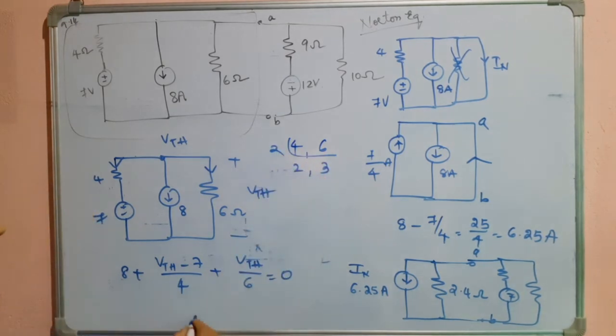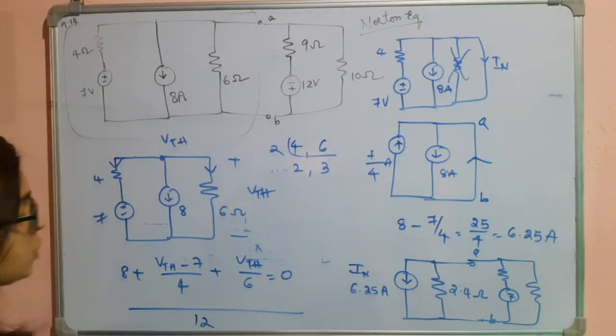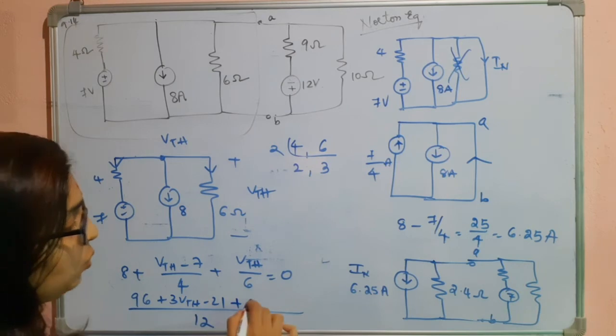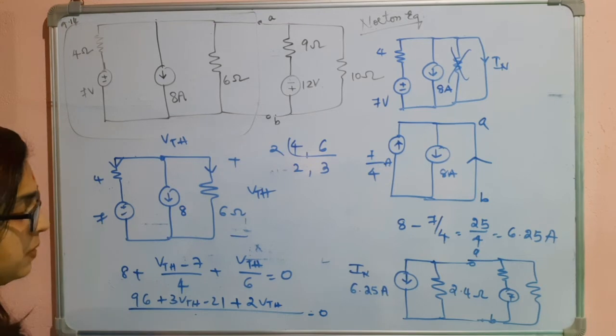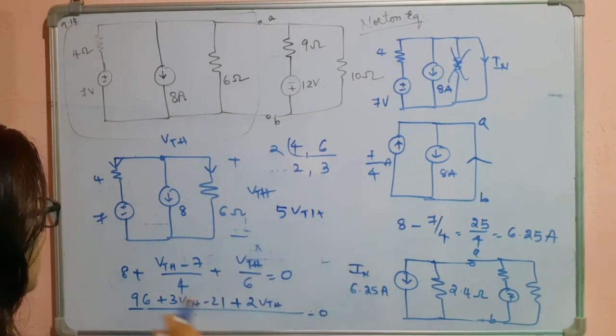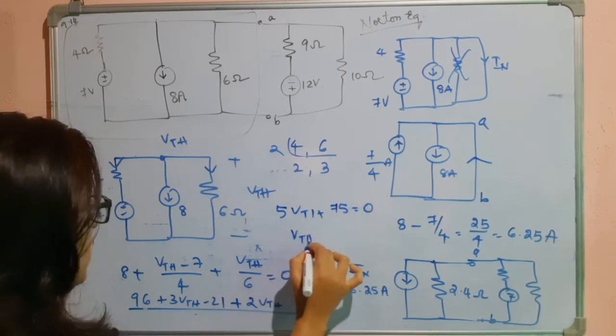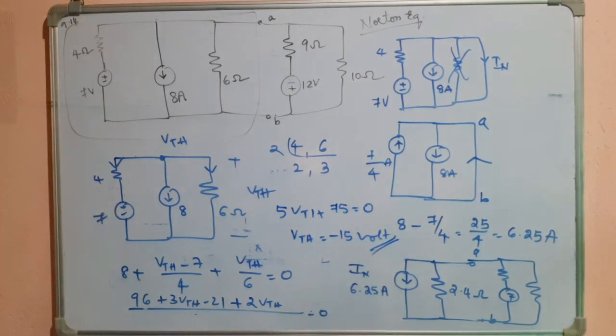What happens? 2, 2, 3, and here you can see it is 12. So here if I want to denominate 12, that means numerator also should be multiplied by 12. So that will be 96, and here 3 should be multiplied, 3Vth minus 21, and here it should be 2. So 2Vth, that is equal to zero. So the denominator comes here and it becomes zero. 3Vth plus 2Vth is 5Vth. 96 minus 21 is 75, that is equal to zero. So Vth is equal to minus of minus 15 volts. Vth is minus 15 volts.